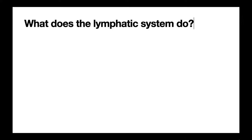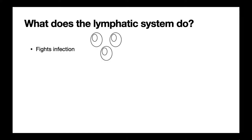When it comes to the roles of the lymphatic system in the body, there are a couple of important things to think about. The first is that the lymphatic system plays a very important role in fighting infection, and it contains a number of white blood cells — for example, plasma cells — to help fight pathogens.